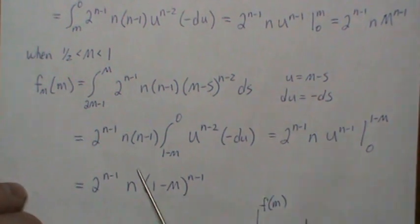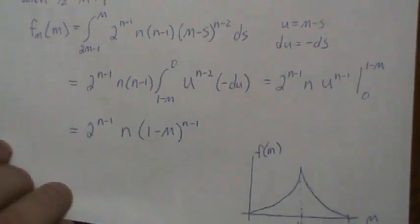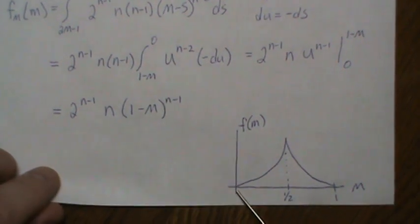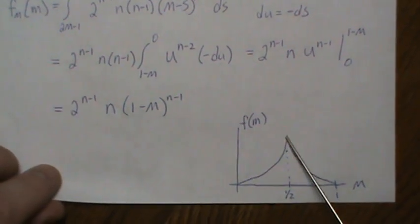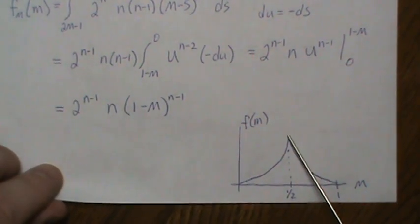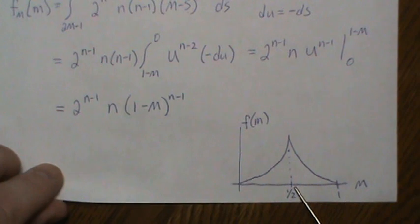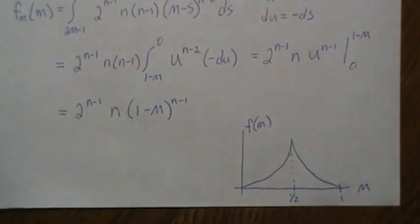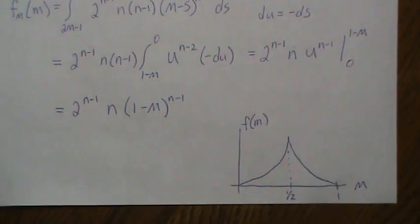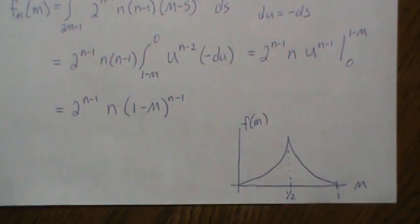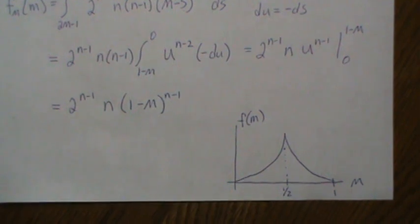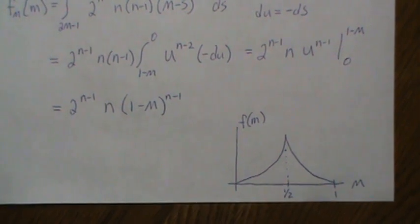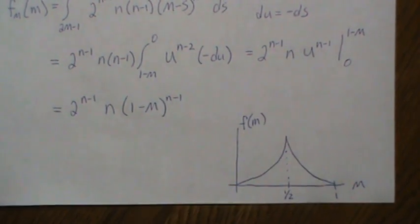Plotting both pieces of the density from 0 to 1, the distribution is symmetric and peaks right at 1/2. That is the density of the mid-range statistic when the underlying data is Uniform(0,1). Hopefully you enjoyed that — please like the video and subscribe so you don't miss the next one.